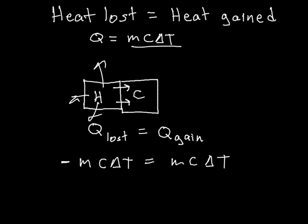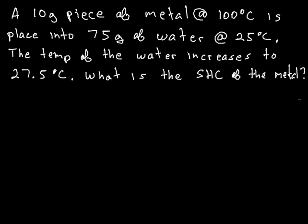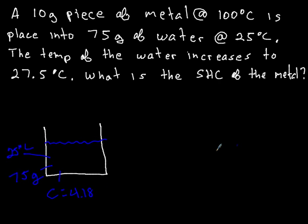So, let's do an example. A 10 gram piece of metal at 100 degrees is placed into 75 grams of water at 25 degrees. The temperature of the water increases to 27 and a half degrees. What is the specific heat capacity of the metal? Let me draw the scenario. You have a cup full of water and the mass of that water is 75 grams. It's also at a temperature of 25 degrees Celsius. And we know that it's got a heat capacity or C value of 4.18 joules per gram degree Celsius.